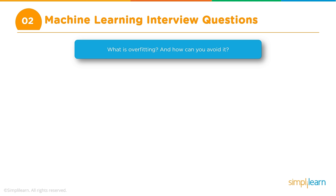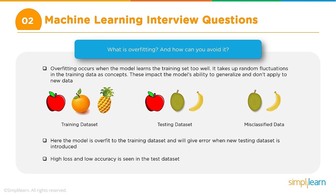Another common question is: what is overfitting and how can you avoid it? Overfitting is a situation where the model has memorized the training data. To explain this, we can draw an analogy: imagine a small child being taught to recognize three fruits — apples, oranges, and pineapples — which represents your training dataset.